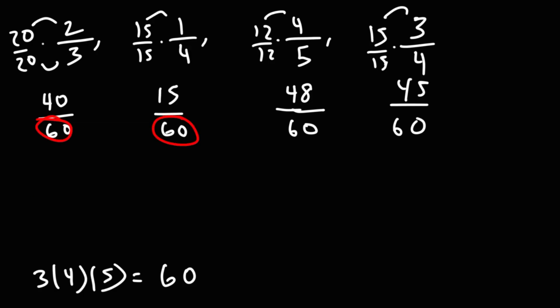Now that the denominator of each fraction is the same, all we need to do is look at the value of the numerator to rank the fractions. So we're going from high to low. The highest is going to be 48, and then that's greater than 45, and 45 is greater than 40, and 40 is greater than 15 in that order.